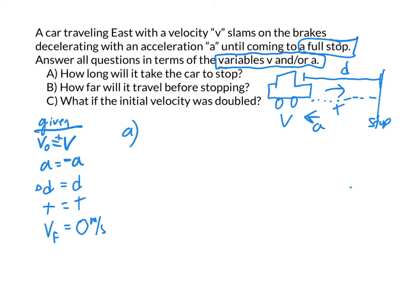The first question is asking for time. You look at your set of equations and decide which one works. In this case, vf equals vo plus at. You treat the variables you know — velocity, acceleration, and v final — as your given values. Distance and time are the unknowns. The variables given to you are the ones you can think of as known.